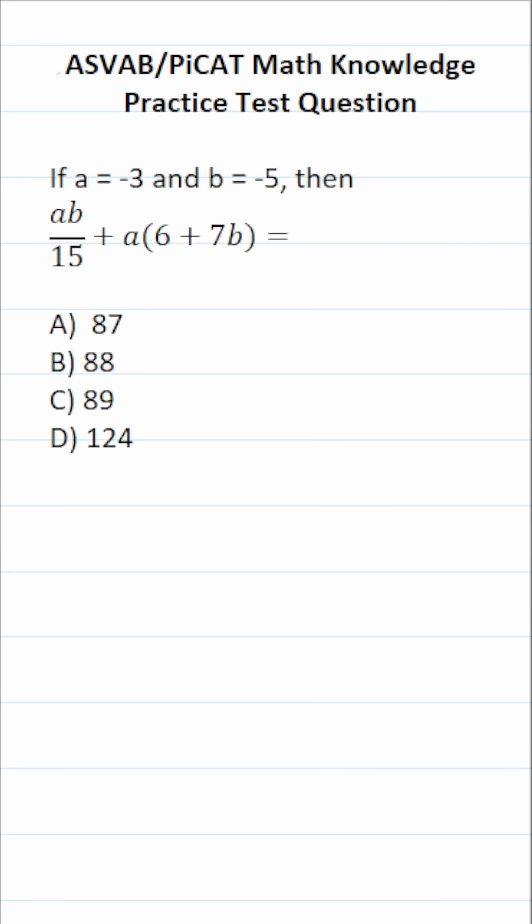So we're going to be evaluating this expression when A equals negative 3 and B equals negative 5. Again, you're not permitted to use a calculator or a reference sheet on the actual ASVAB or PiCAT. So as you practice, you want to get in the habit of copying things down accurately on your own scratch paper, including for this practice test question.